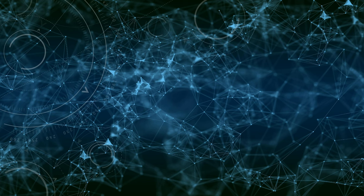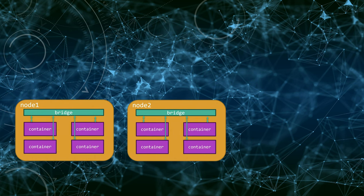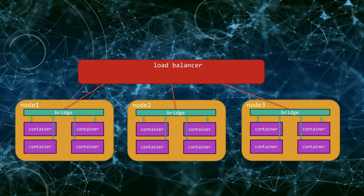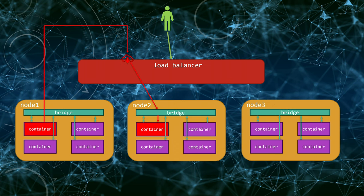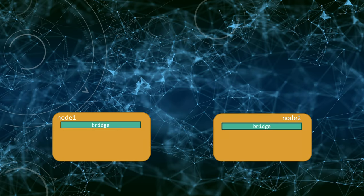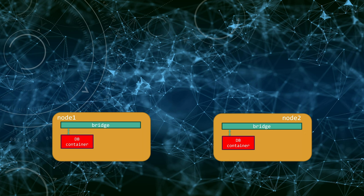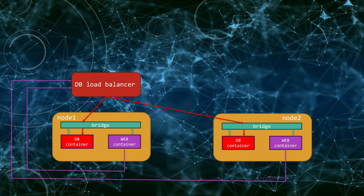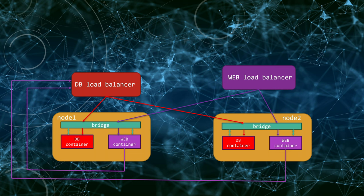However, larger production-scale deployments require high availability and scalability. One could deploy multiple single-node Docker hosts running containers and put a load balancer in front — but managing such a setup at scale would quickly become a nightmare. Containers on different Docker hosts would not be able to talk to each other directly. You'd have to expose one container to the external world so that another container on a different host can access it. But what if a node goes down? All containers and services on that node will also go down. You'd have to replicate services on multiple nodes and rely on external balancers.